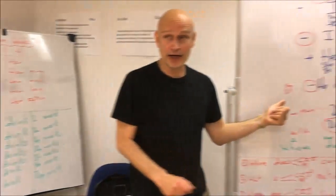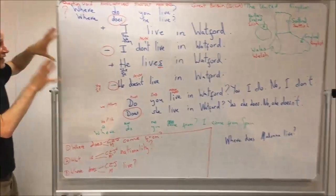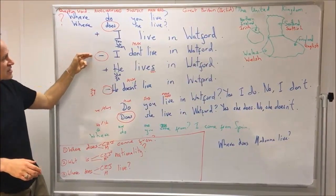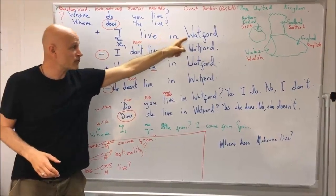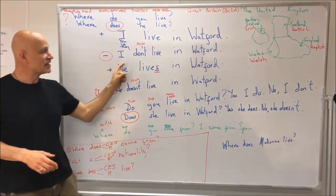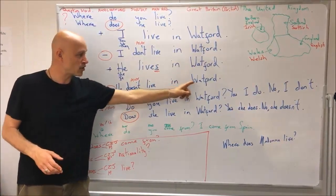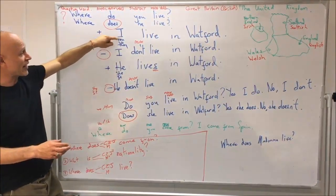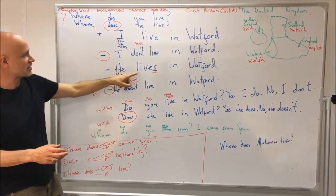Then we went over here and looked at positive sentences and negative sentences. I live in Watford; I don't live in Watford. He lives in Watford; he doesn't live in Watford. Remember: I, you, we, they live — but he, she, it lives.